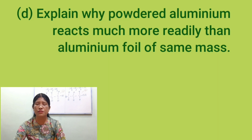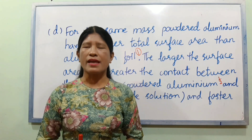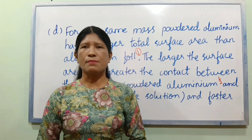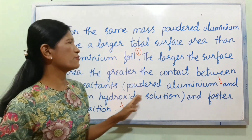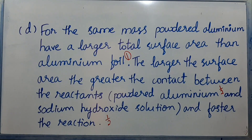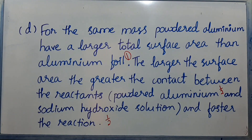Number D: Explain why powdered aluminium reacts much more rapidly than boulder aluminium. For the same mass, powdered aluminium has a larger surface area than boulder aluminium. The larger the surface area, the greater the contact between the reactants, and therefore the greater the rate of reaction.